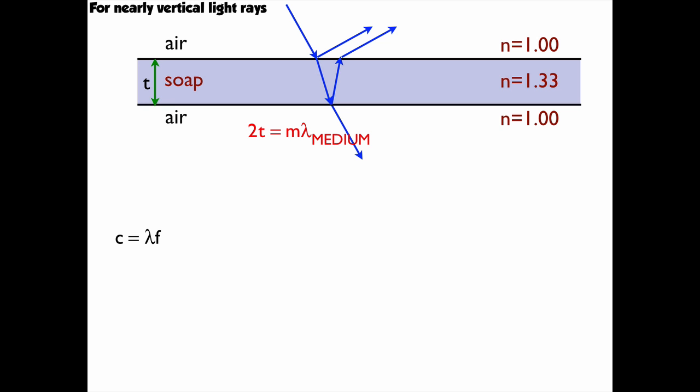So I use the wave equation, c equals lambda f, and the index of refraction is c over the velocity in the medium, which means that the wavelength in the vacuum, or air is the same, divided by the wavelength in the medium is equal to the index of refraction. When I rearrange that, the wavelength in the medium is equal to the wavelength in the vacuum, which is the same as air, divided by the index of refraction.